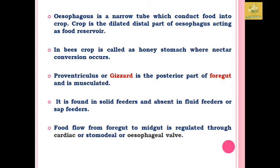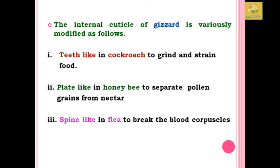The crop is the dilated distal part of the esophagus, which acts as a food reservoir. In bees especially, it is modified as the honey stomach where the nectar conversion process occurs. After the crop, the proventriculus, also known as the gizzard, is the posterior part of the foregut and is also a musculated part. It is found in solid feeders and absent in fluid feeders or sap feeders. The food flow from the foregut to the midgut is regulated through the cardiac valve, also known as the esophageal valve, which is at the final part of the foregut.